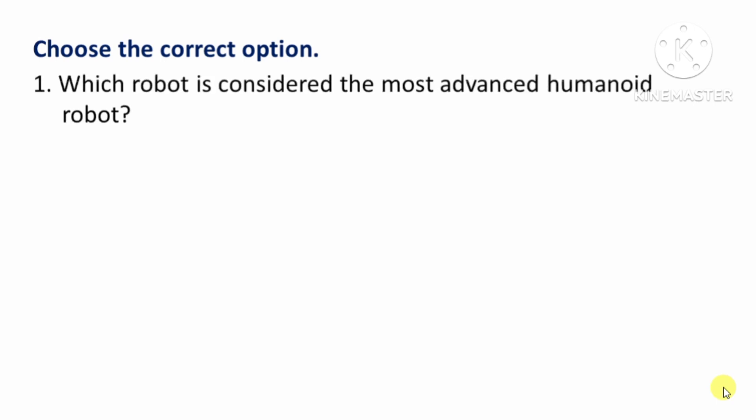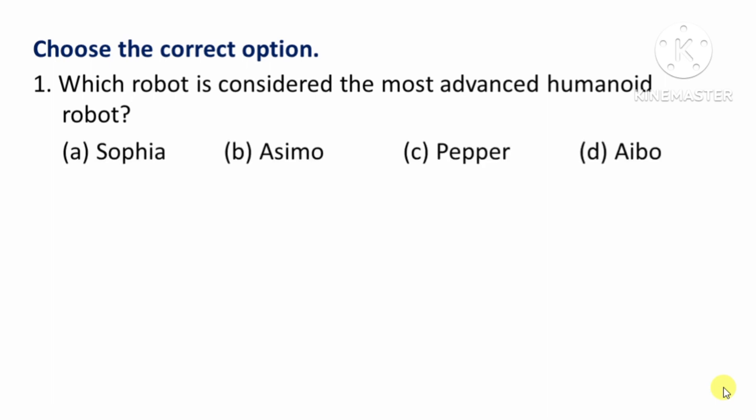Choose the correct option. First question: Which robot is considered the most advanced humanoid robot? The right answer is option A — Sophia.